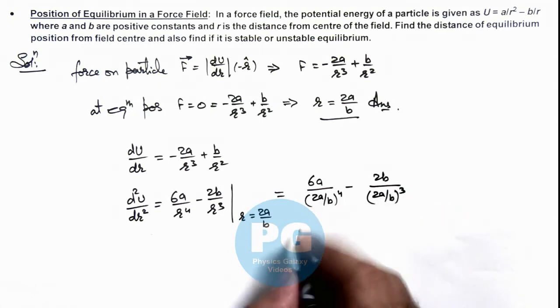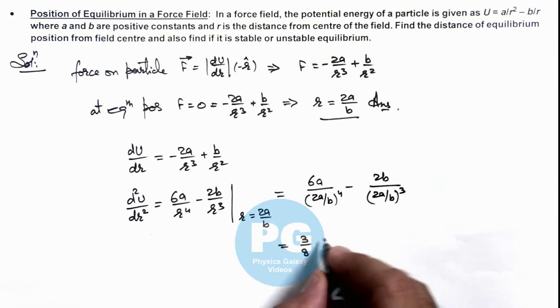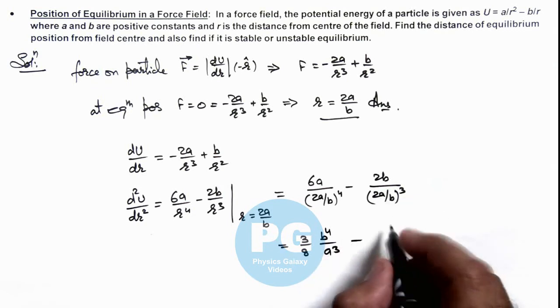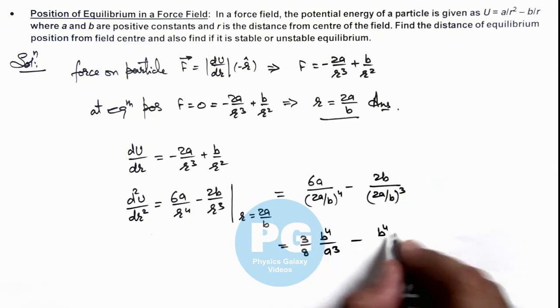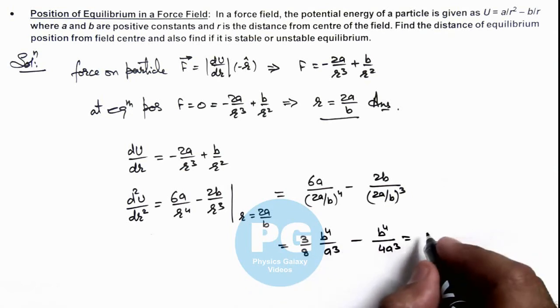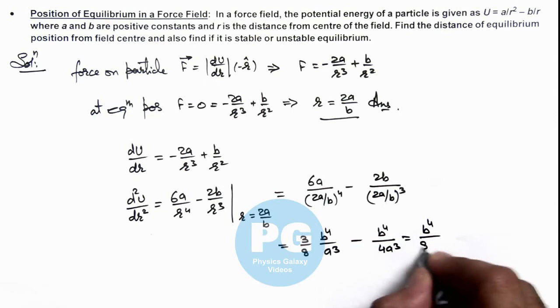Simplifying this, the result is 3b⁴/(8a³) - b⁴/(4a³). On further subtracting, we get b⁴/(8a³).